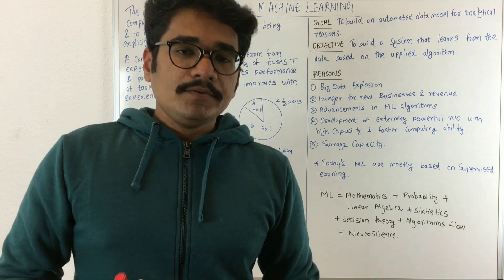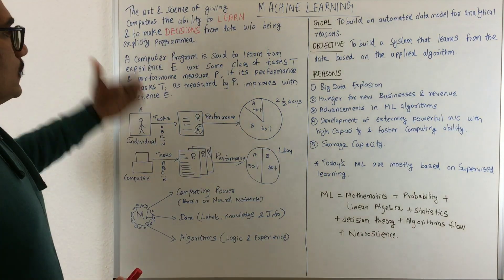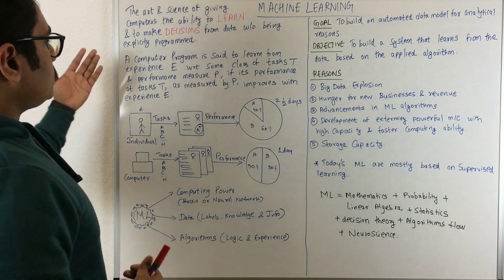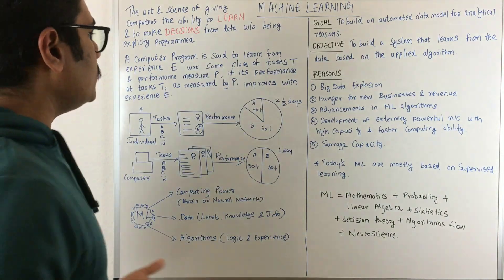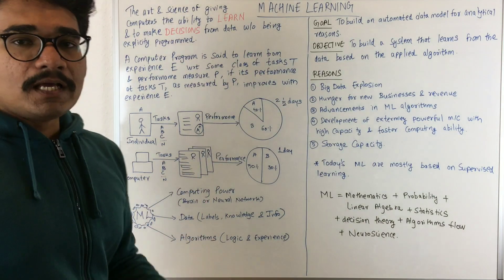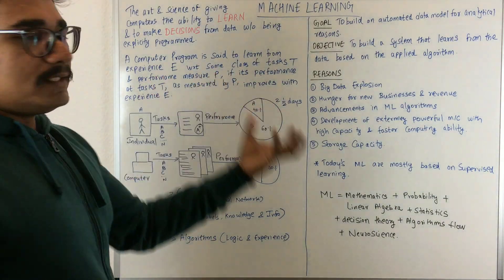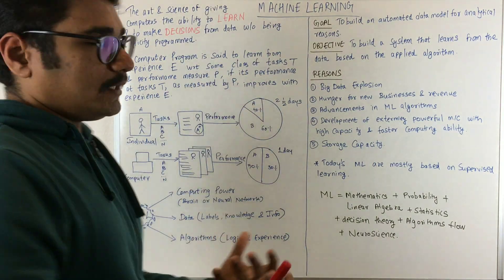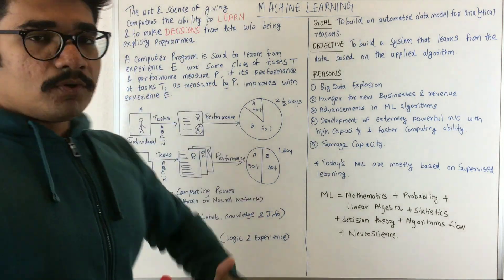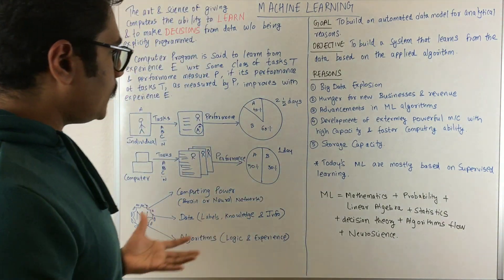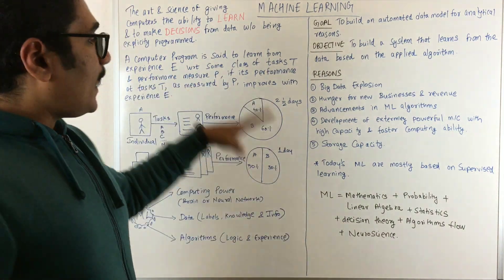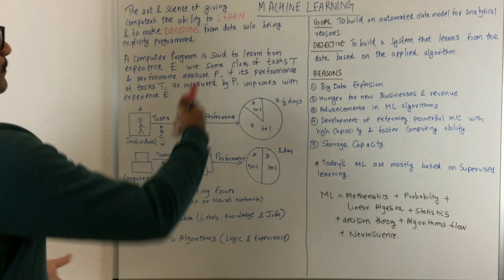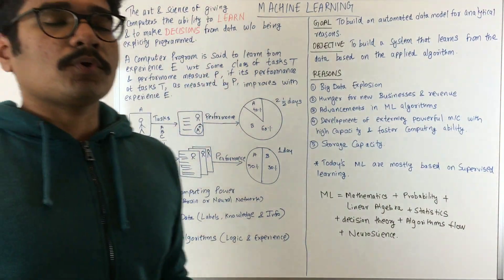Another definition says that a computer program is said to learn from its experience E with respect to some class of task T. It has given some certain tasks to do, and its performance measure P is evaluated. If its performance improves with experience, then that computer program is set to learn.